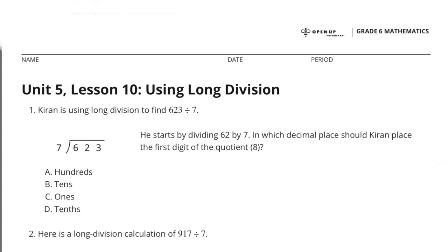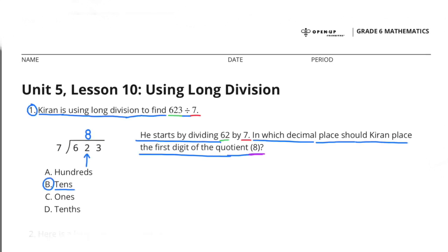Unit 5 Lesson 10, Using Long Division Number 1. Kieran is using long division to find 623 divided by 7.